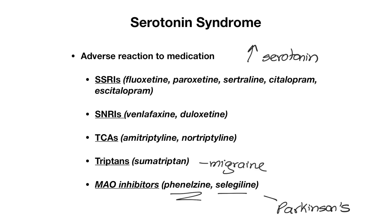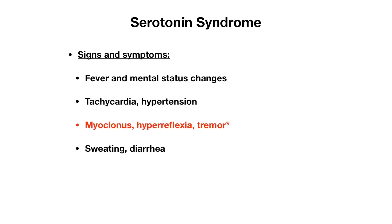Often on a question stem you might see more than one of these medications listed, because serotonin syndrome often involves a combination. A patient with serotonin syndrome will often have signs and symptoms very similar to NMS, which is what makes them difficult to differentiate. They can have fever, mental status changes, tachycardia, and hypertension. But unlike NMS where we talked about rigidity, with serotonin syndrome it will be more of a hyperactivity — so you will see myoclonus, hyperreflexia, and tremor, compared with the more rigid, bradykinesic state of NMS.